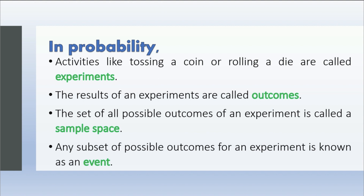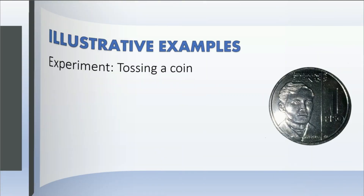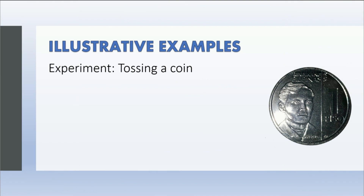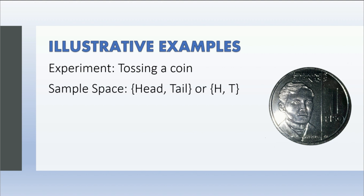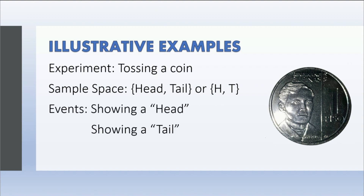There is no better way to understand it other than having examples. Example number one: the experiment is tossing a coin. And when we toss a coin, either we get a head or a tail, and we call it as sample space. Then, showing a head or showing a tail is an event.